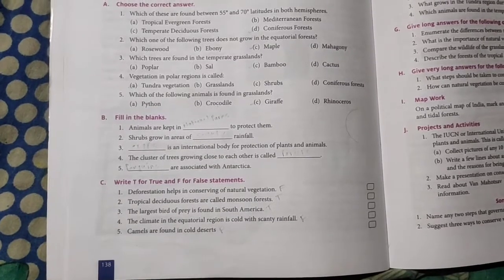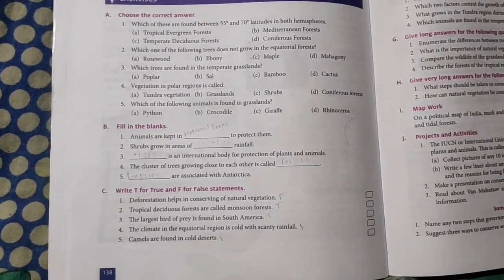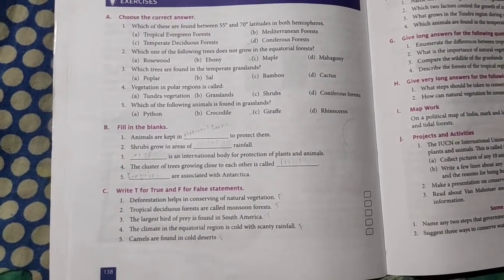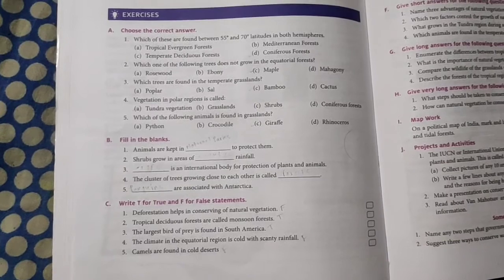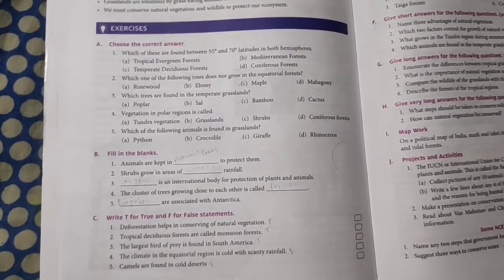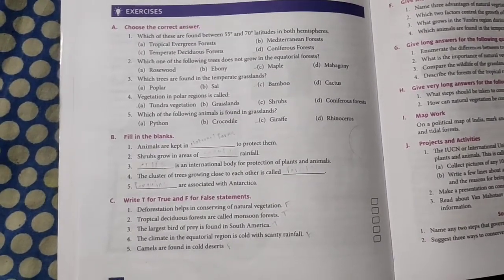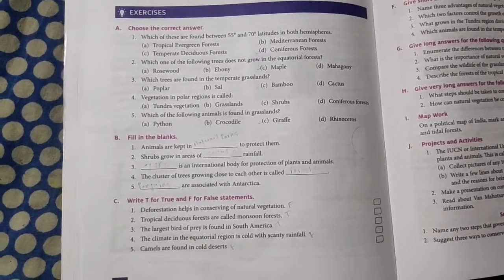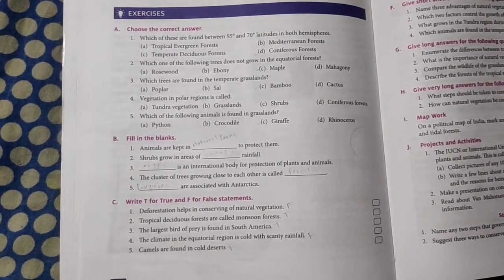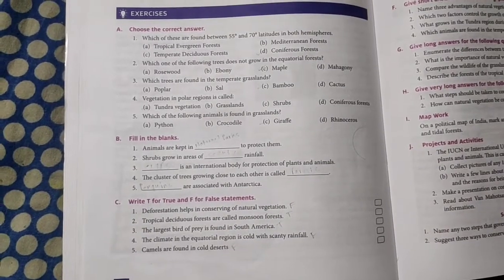Fifth: dash are associated with Antarctica. Penguins are associated with Antarctica, also polar bears. You will write penguins. Then question C: write T for true and F for false. First one: deforestation helps in conserving natural vegetation. No, that will be very wrong, so that will be false.